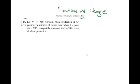I'm working in section 1.1. Question 14 says: let W equal F of T represent wheat production in Argentina in millions of metric tons, where T is years since 2015. Interpret the statement F of 4 equals 20.